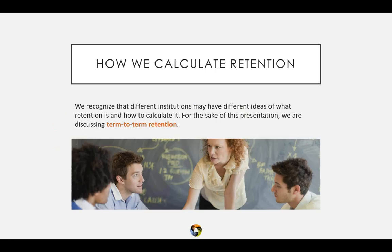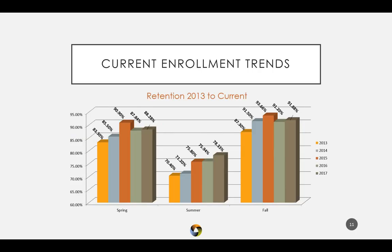I'd like to start with how we calculate retention for this conversation. Different institutions have different ideas about what retention is and how to calculate it. We're going to talk about term-to-term retention for our online programs, which is different from ground program retention. Because we have three starts a year — fall, spring, and summer cohorts — monitoring retention term to term, from fall to spring, spring to summer, and summer to fall, is most effective. It helps us keep our eye on that needle each and every day.